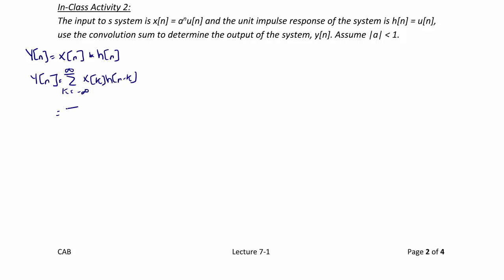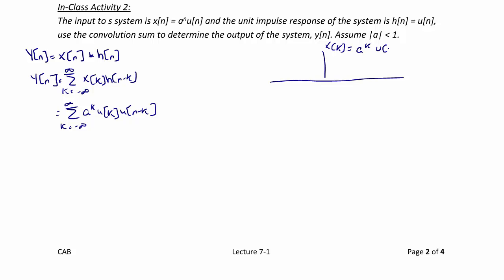Which is equal to the summation from k equal negative infinity to infinity of a to the k, u of k, u of n minus k. Now let's make a sketch. Here is the sketch of x of k equals a to the k, u of k. We have zeros up to time zero, and at zero, a to the zero is 1. Then at 1 we have a, at 2 we have a squared, at 3 we have a cubed, and so on.